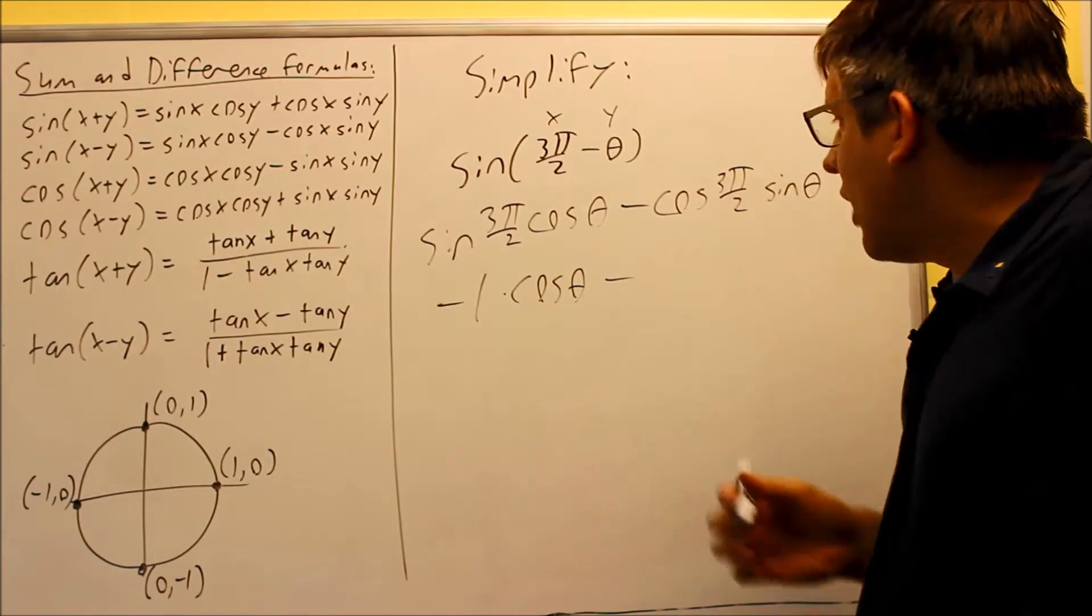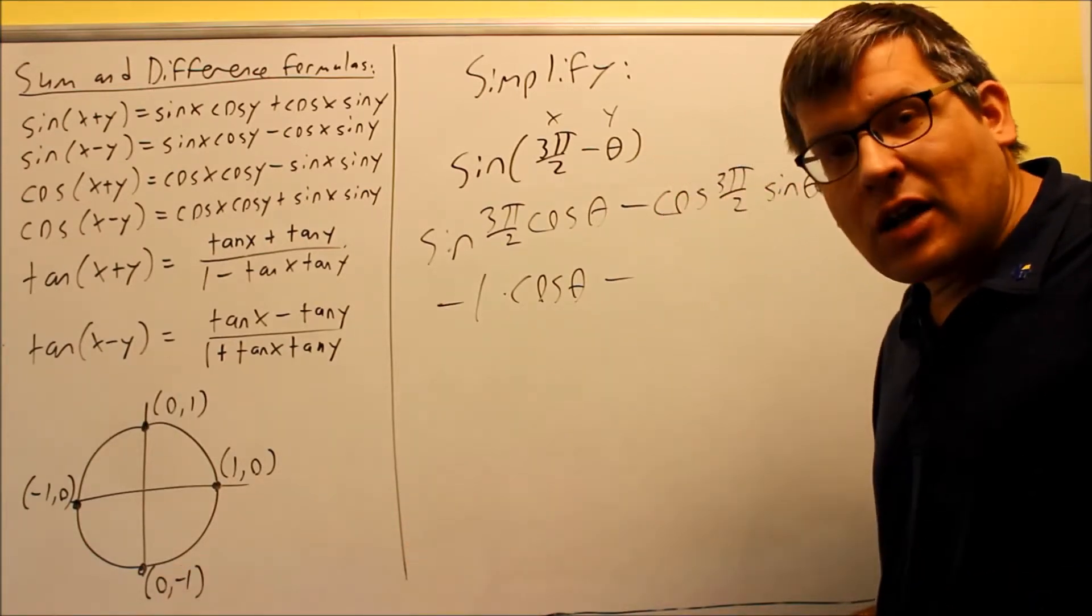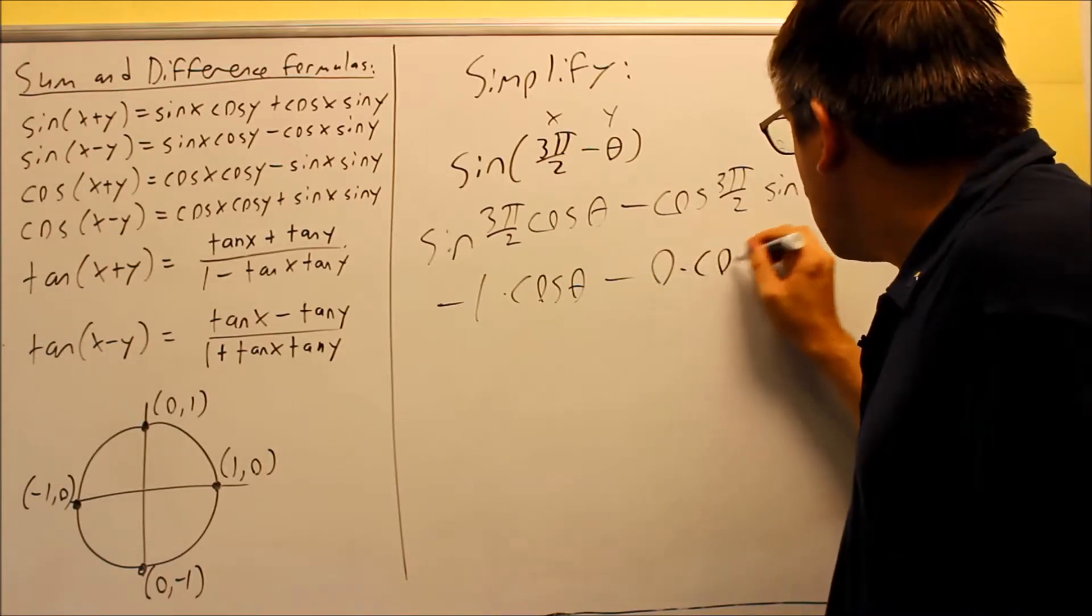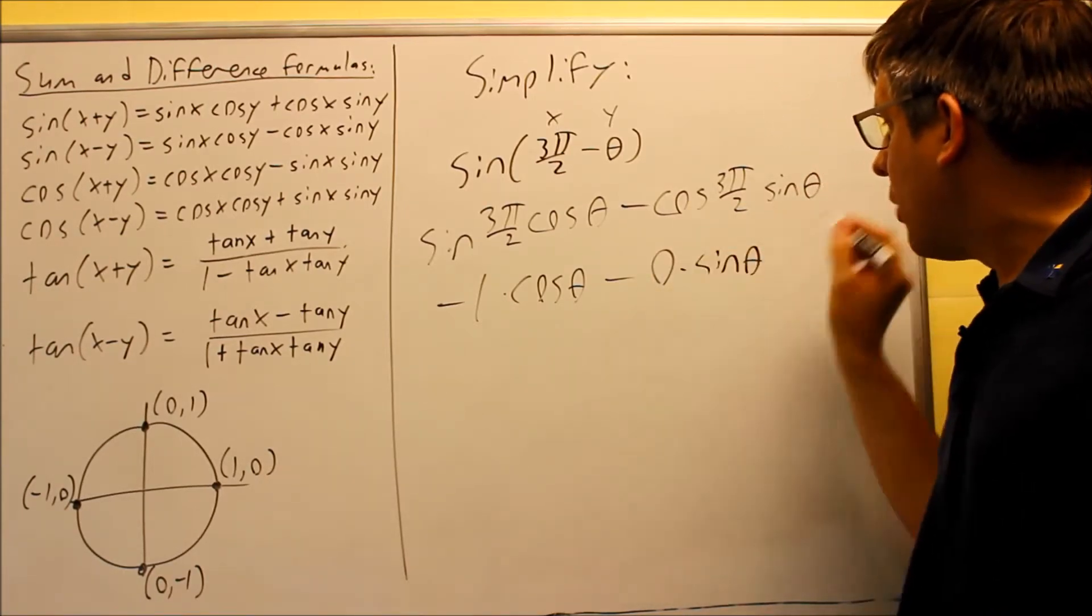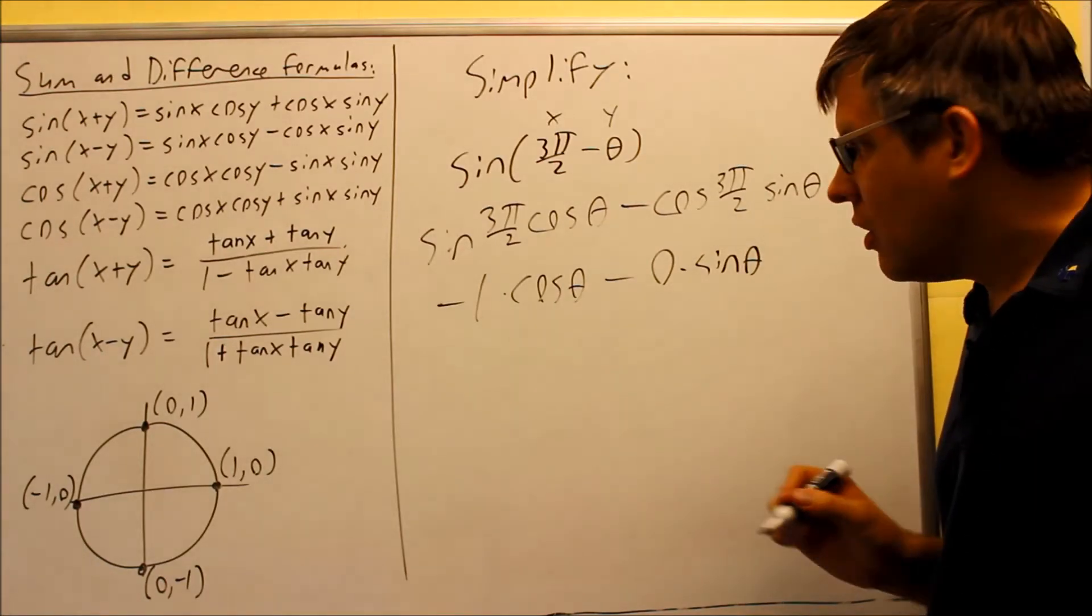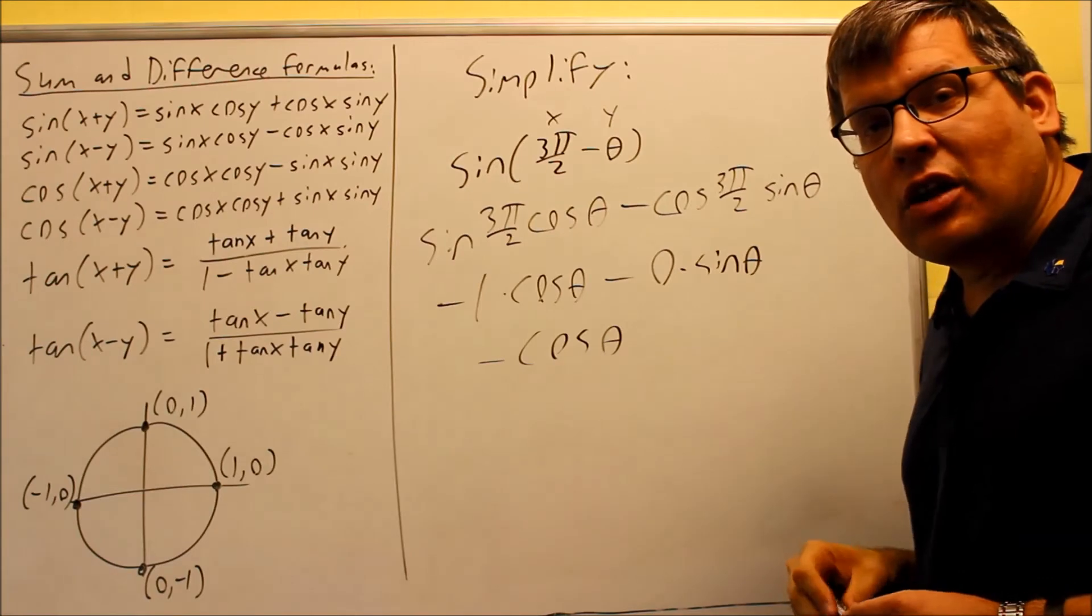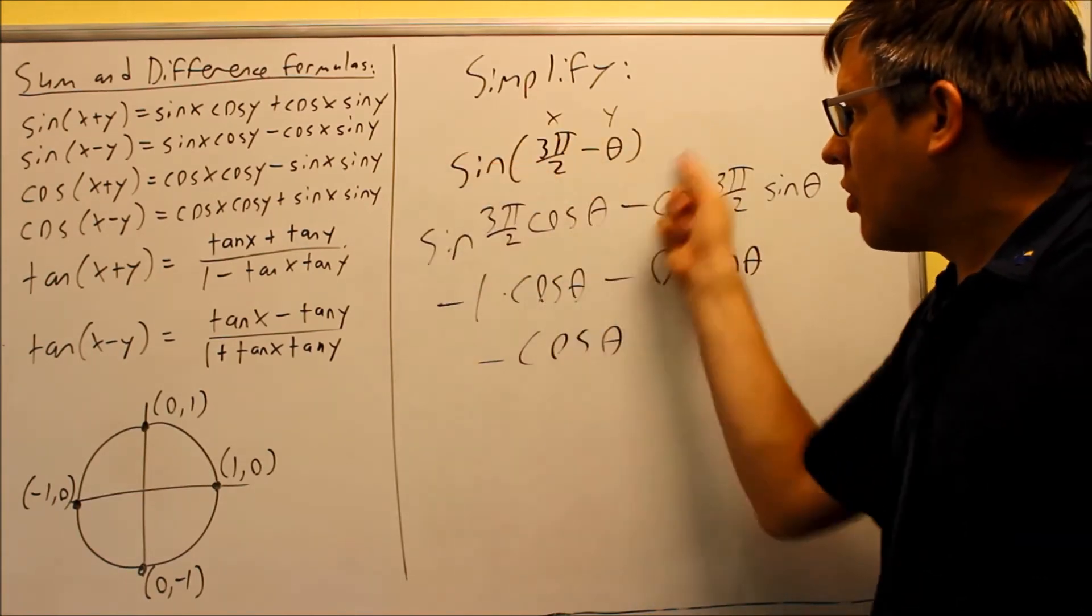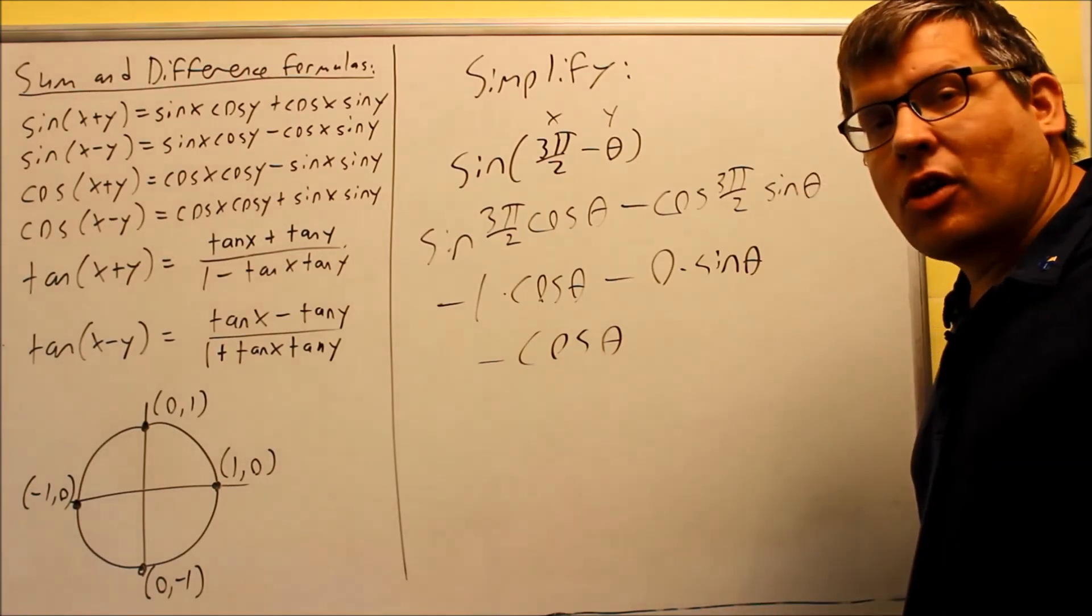Next, I want to put in the value for cosine 3π/2. The cosine is the x value. In this case, it's going to be 0. So I have 0 times sine theta, and that whole part is going to actually just end up canceling out. So my final answer for this is going to be negative cosine theta. What that means is that this whole entire expression here can be simplified down into just simply negative cosine theta.